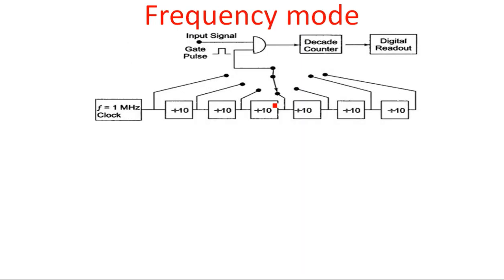The second mode of operation is the frequency mode. The first mode counts the total number of pulses, while the frequency mode counts the number of pulses per second. Counting pulses per second gives us frequency. So frequency f is equal to N divided by T, where N is the number of pulses and T is the time period. This is what we are doing here.